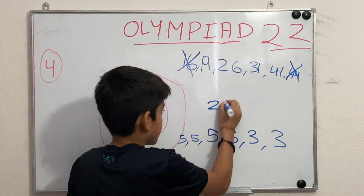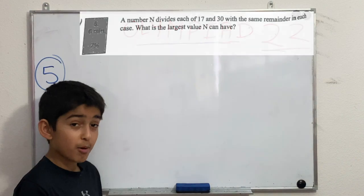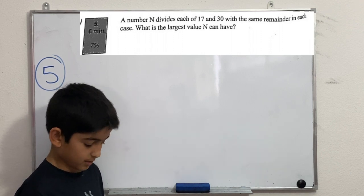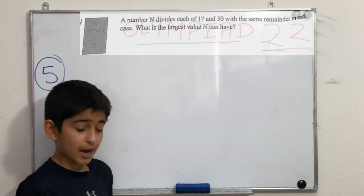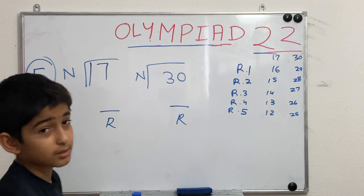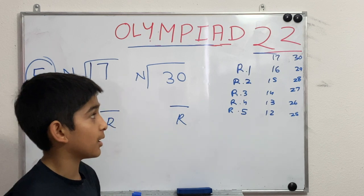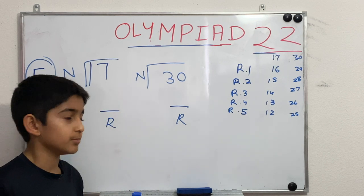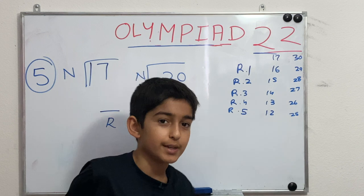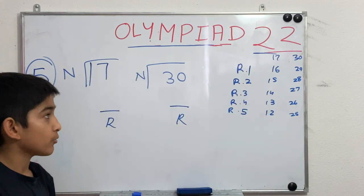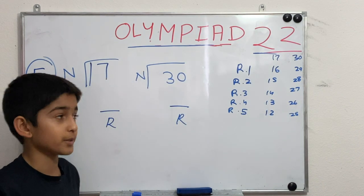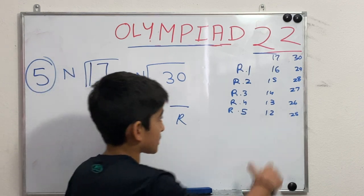The fifth problem says: a number n divides each of 17 and 30 with the same remainder. What is the largest value n can have? We check different remainders: if the remainder is 1, we get 16 and 29; if 2, then 15 and 28; and so on. We need to find a pair where both values share a common factor n at least 2.